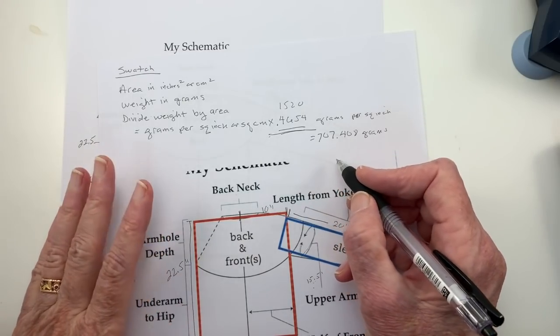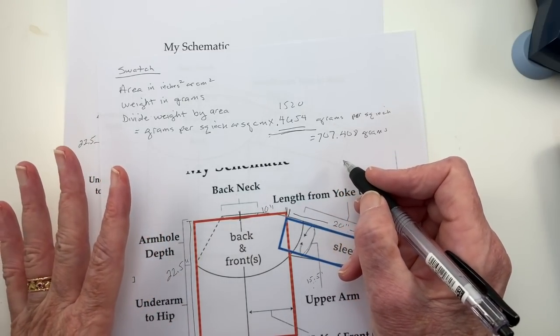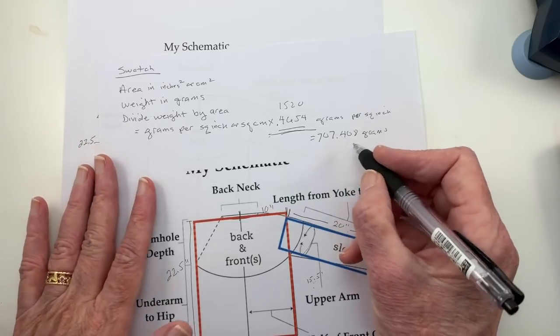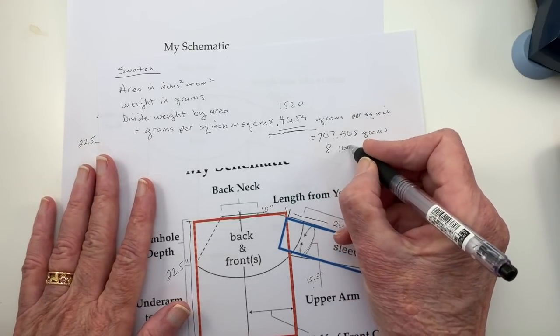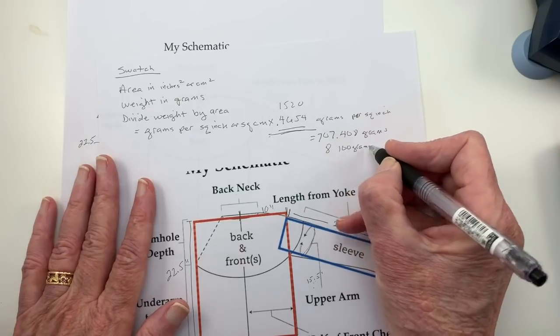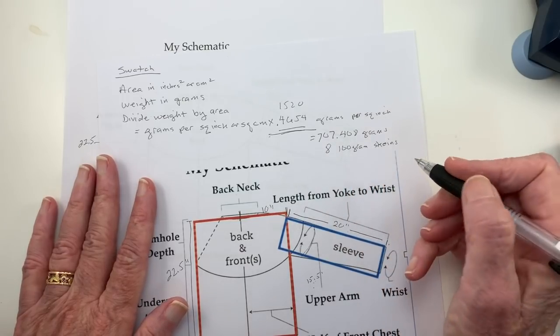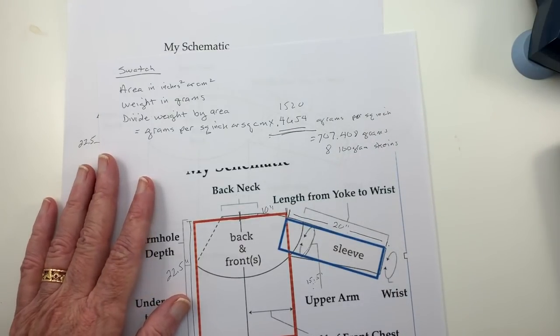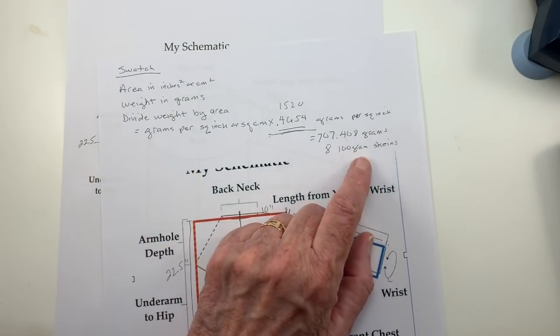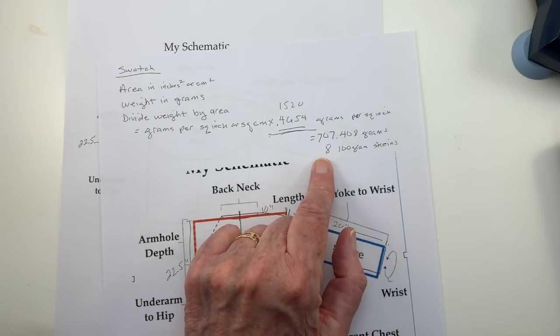I always buy one extra skein just for swatching. So in this case, I would buy eight 100 gram skeins, or balls, or hanks, or whatever you want to buy in your yarn. If you're buying 50 gram skeins, then you would get 16, right?